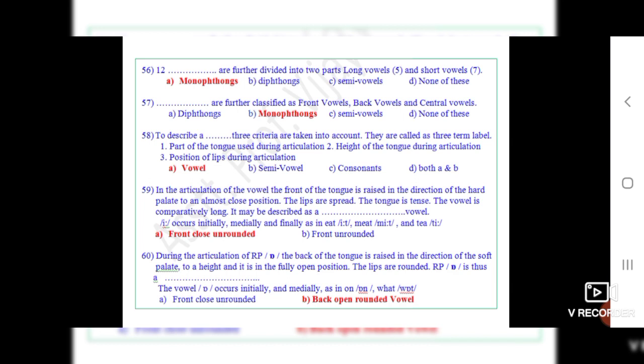Question number 56: Twelve dot dot are further divided into two parts, long vowels and short vowels. The correct option is A, monophthongs.